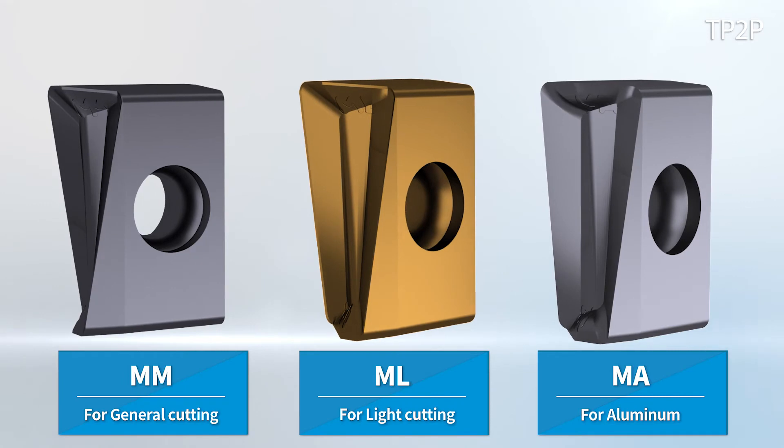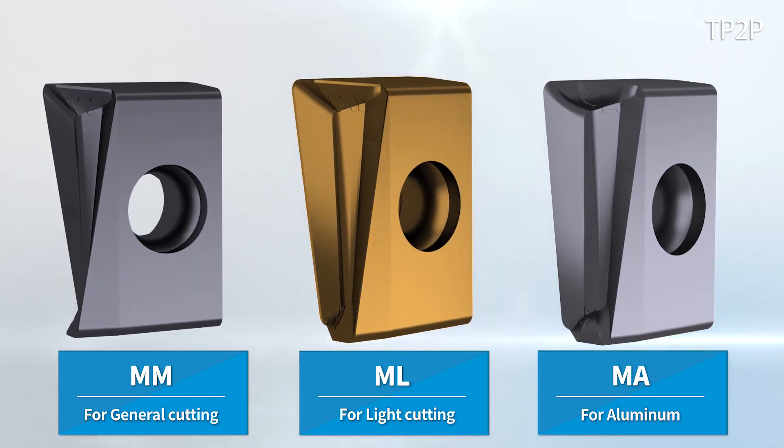The TP2P consists of the general-purpose chip breaker MM for cast iron, chip breaker ML for light cutting, and chip breaker MA for aluminum.